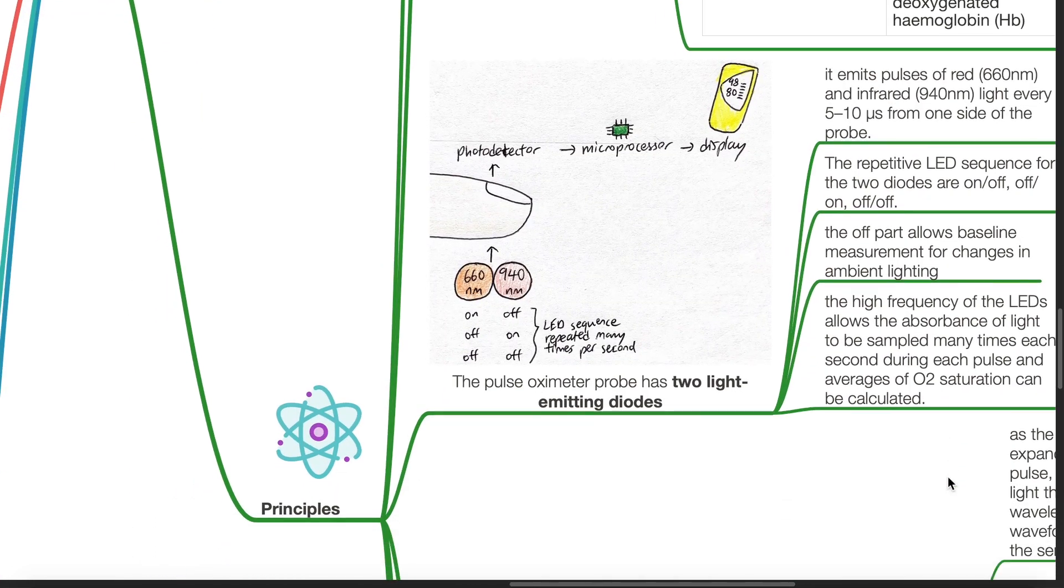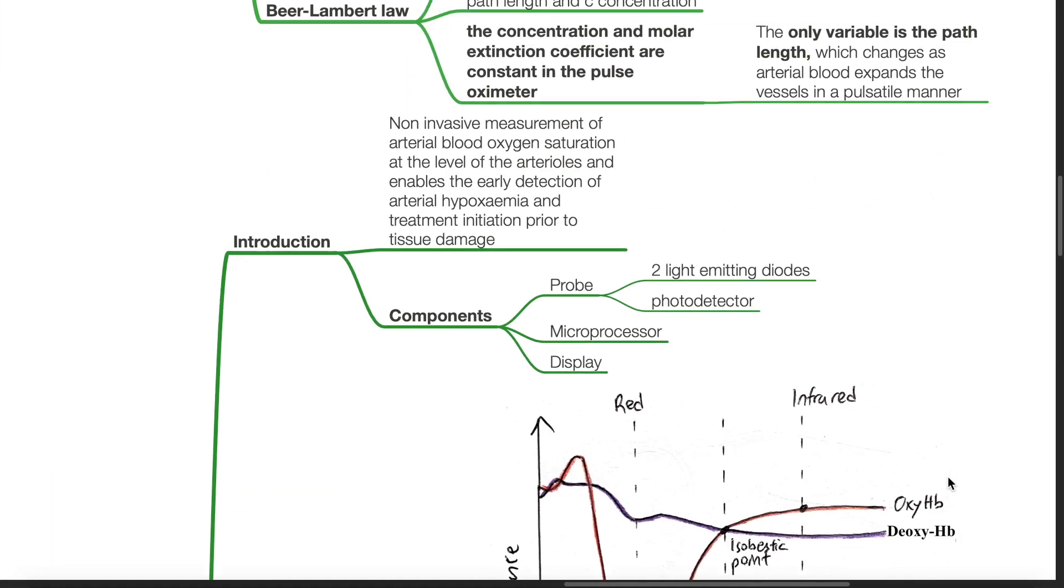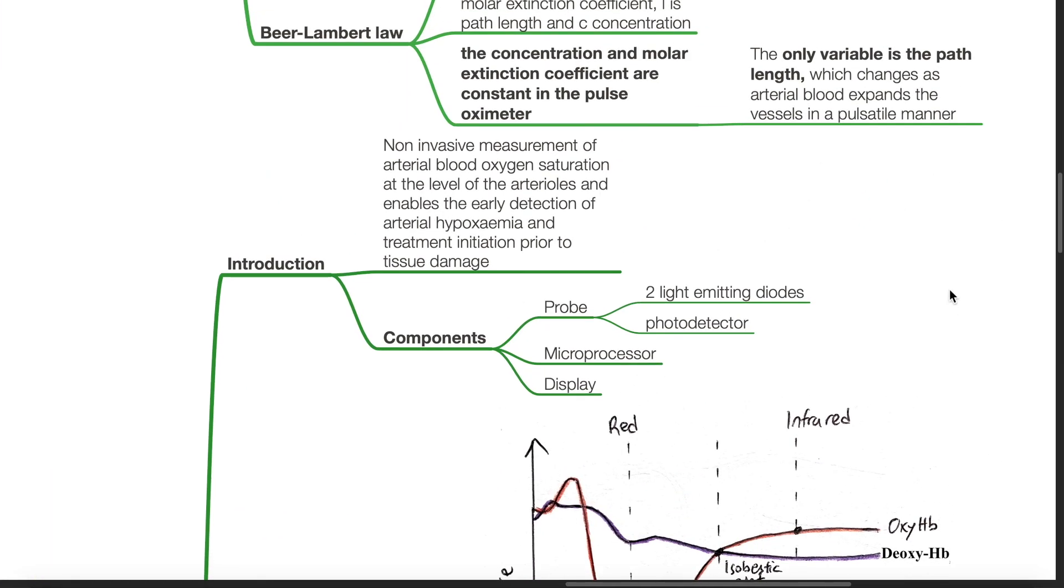The principles of pulse oximetry. Pulse oximetry is a non-invasive measurement of arterial blood oxygen saturation at the level of the arterioles, and enables the early detection of arterial hypoxemia and treatment initiation prior to tissue damage.